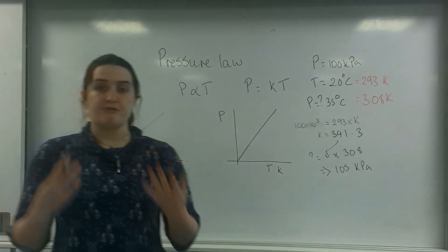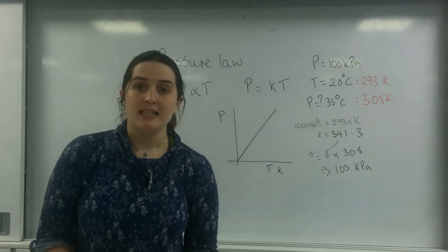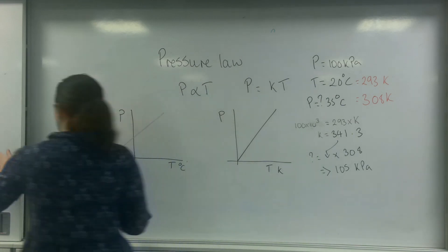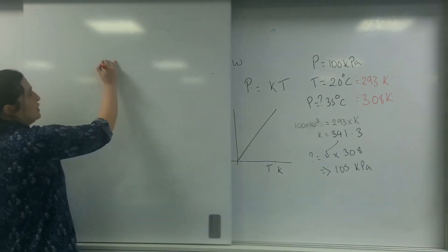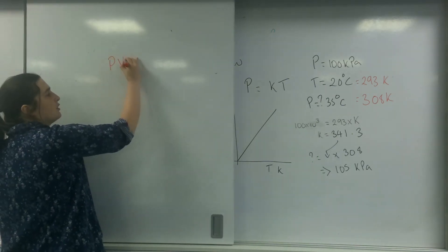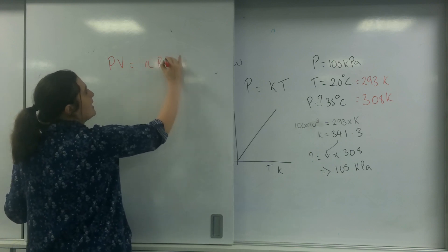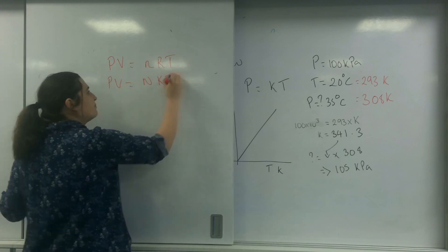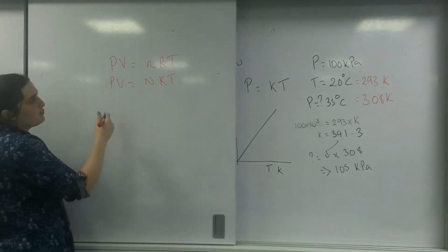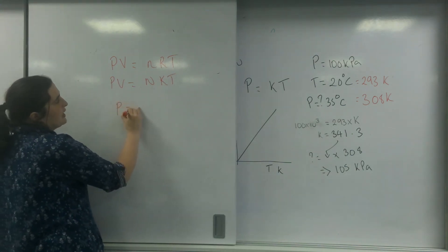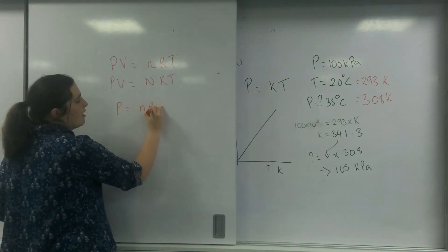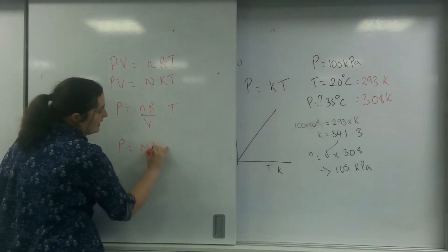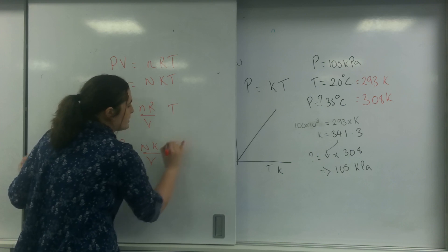So that is the pressure law. Now this formula is not on your data sheet, but there is one just like it: pressure times volume equals nRT, or pressure times volume equals nKT. If I rearrange this, I get pressure equals nR over volume times temperature, or pressure equals nK over volume times temperature.